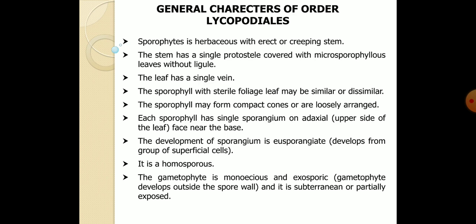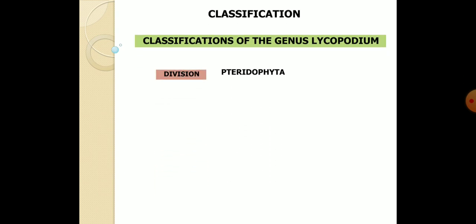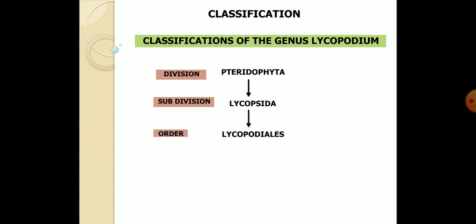In Lycopodium, the sporangia are homosporous, meaning they produce a uniform type of spore. The gametophyte is monoecious and exosporic in nature, substantially or partially exposed to the outer surface, and is usually associated with mycorrhizal association. This concludes the general characteristics of Lycopodium. Coming to the classification: division Tracheophyta, subdivision Lycopsida, order Lycopodiales, family Lycopodiaceae, example: Lycopodium.